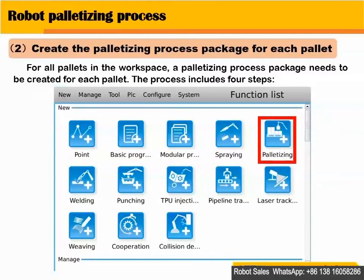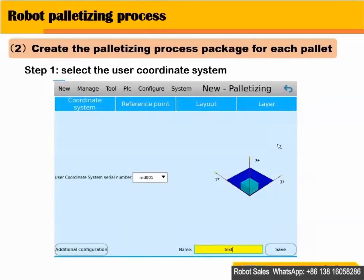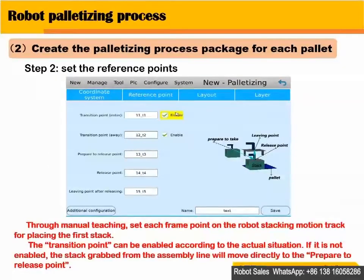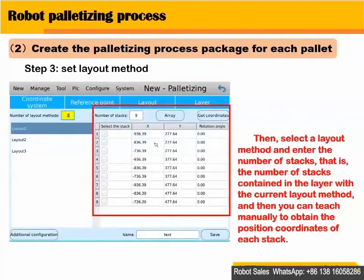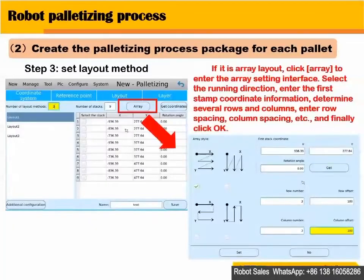The process includes four steps. Step 1: Select the user coordinate system. Step 2: Set the reference points. Step 3: Set the layout method. First, enter the number of layout methods that will be used on the pallet. Then, select a layout method and enter the number of stacks. If it is ArrayLayout, click Array to enter the ArraySiding interface.